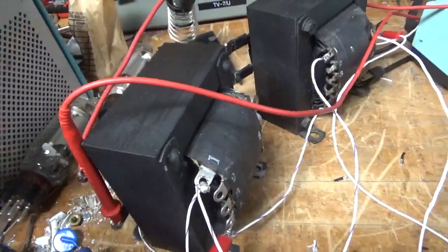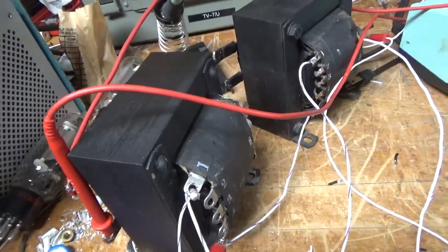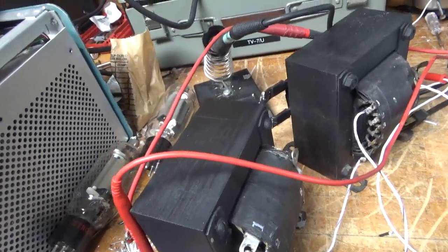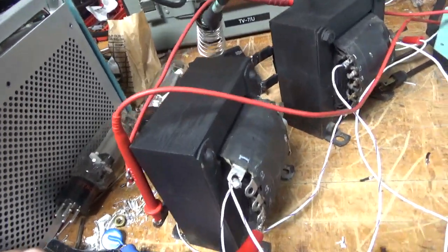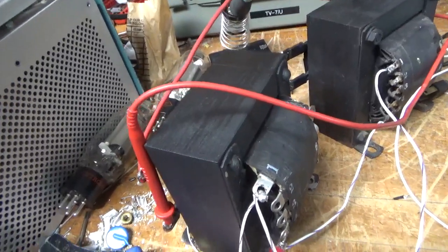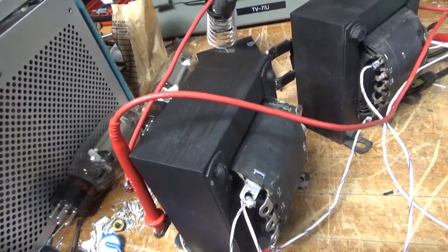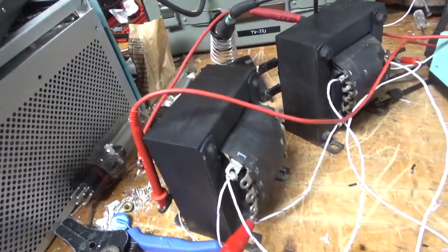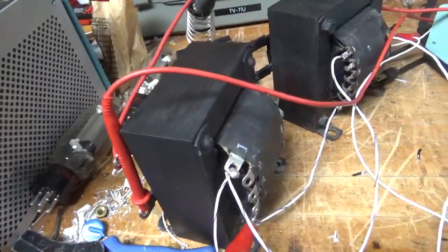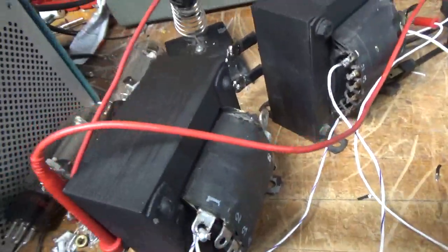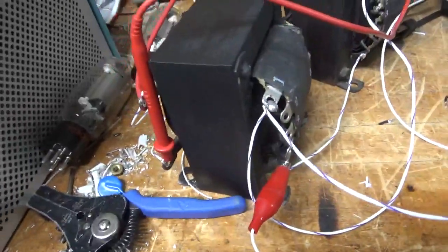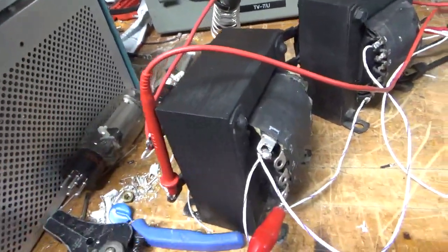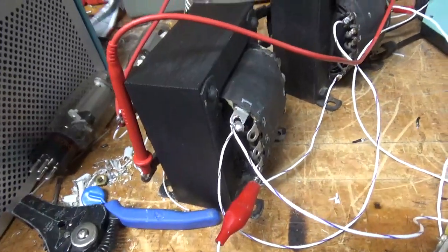What I'm going to do is, I will mount these and get everything wired up to keep the current equal amongst the two. What I'm going to do is, I will jump them together. I'm going to use number 4. I know it's overkill. Probably 8 would probably be fine, but I have a roll of Teflon number 4 wire. I have a million ring terminals here.